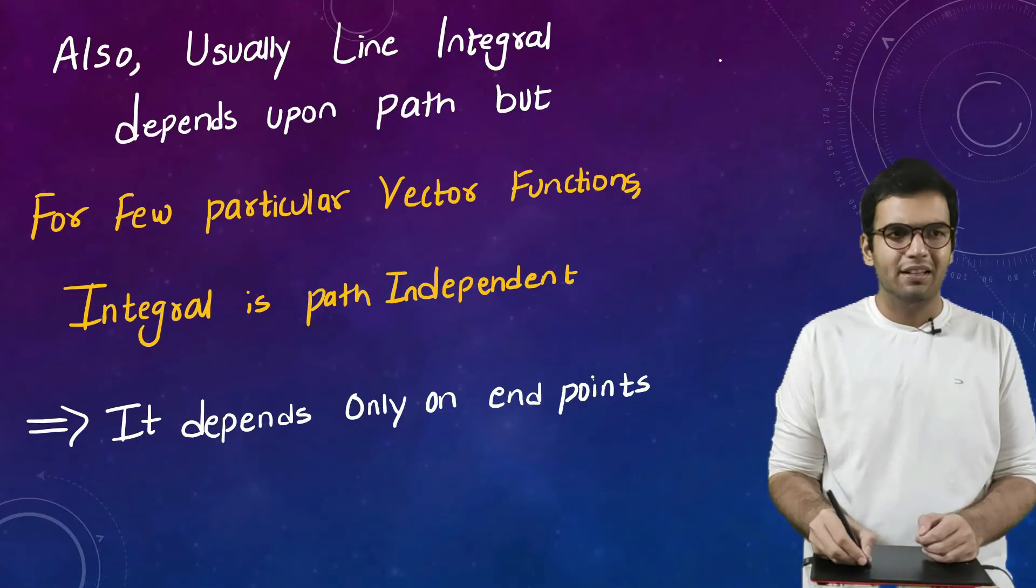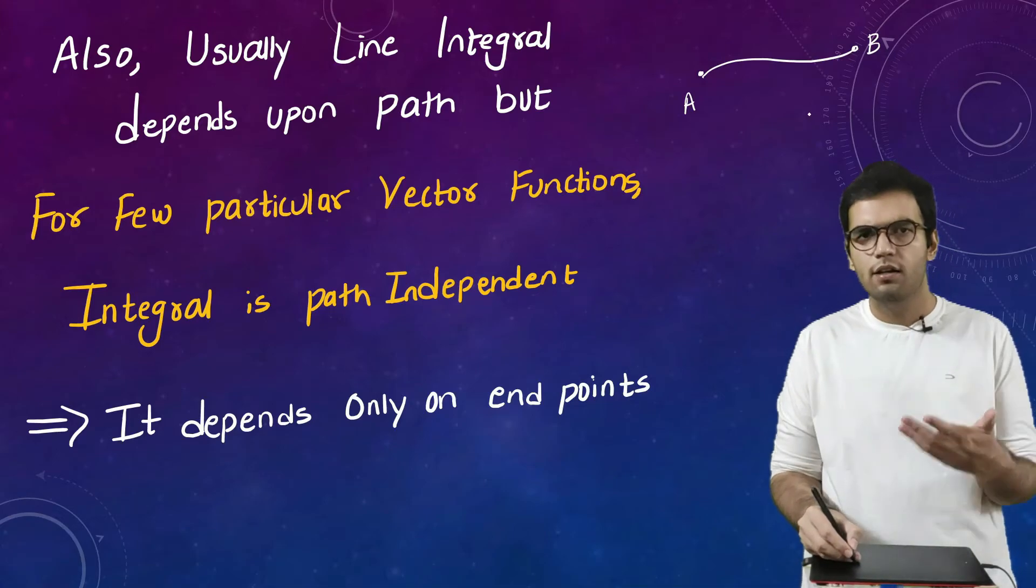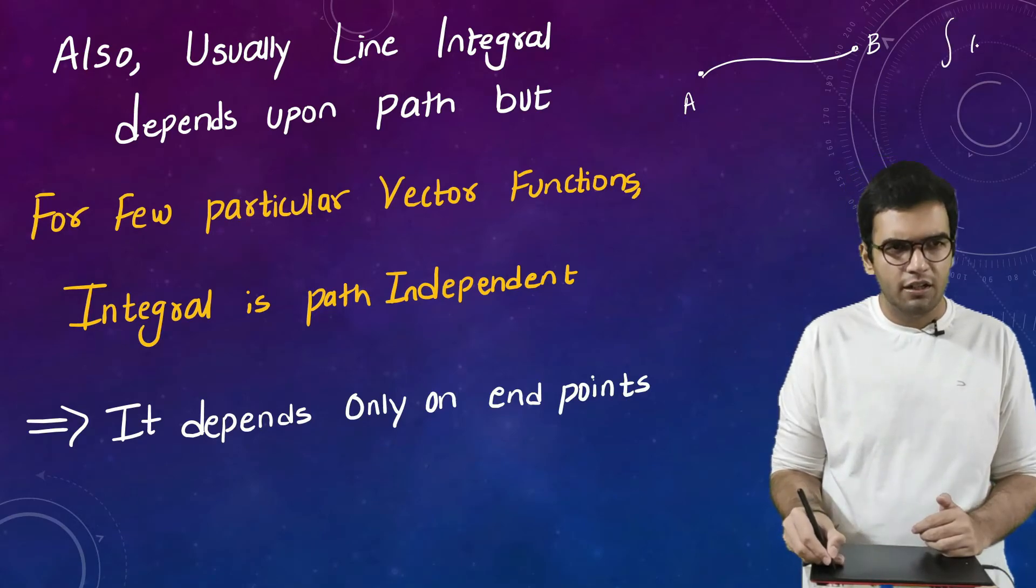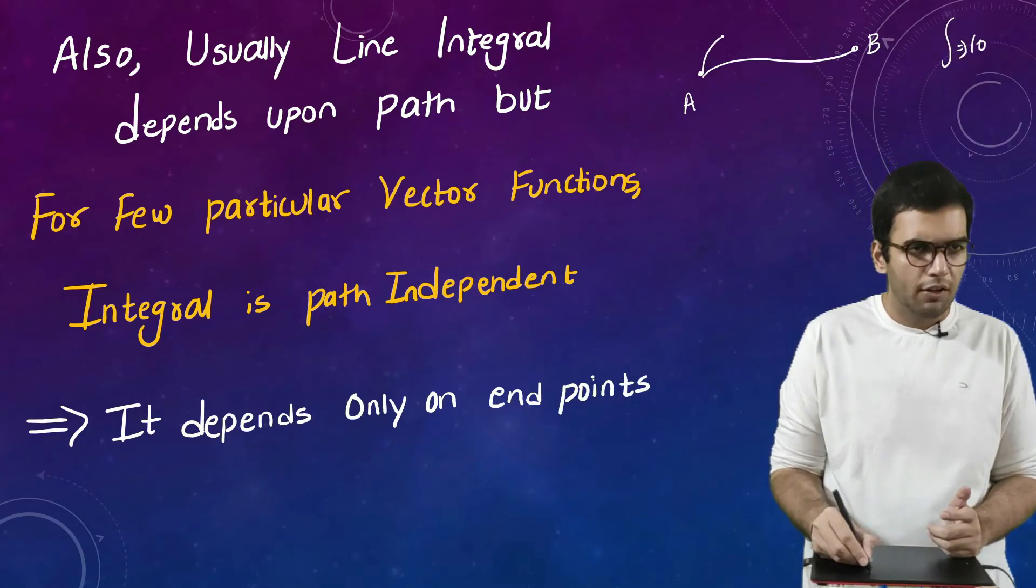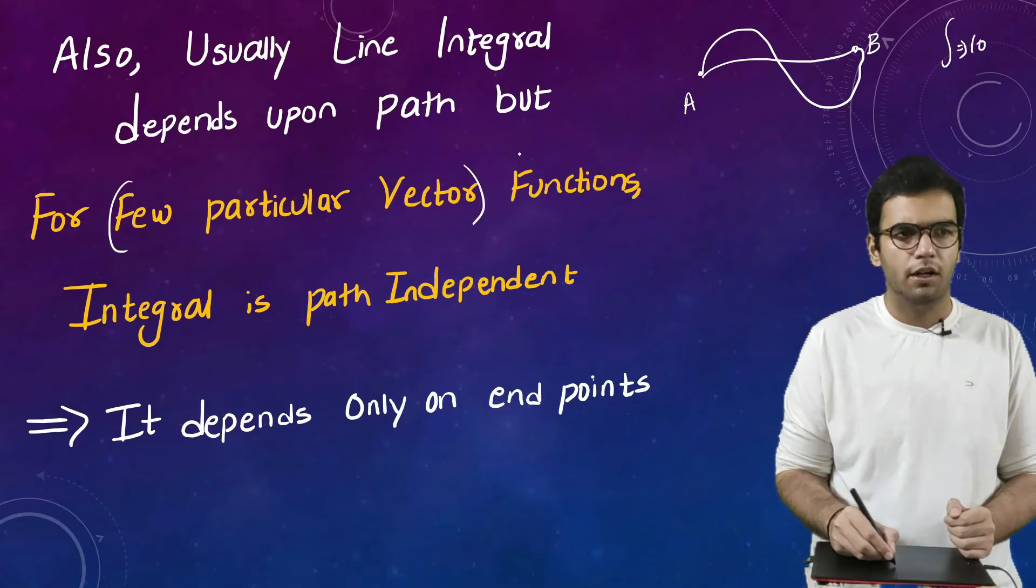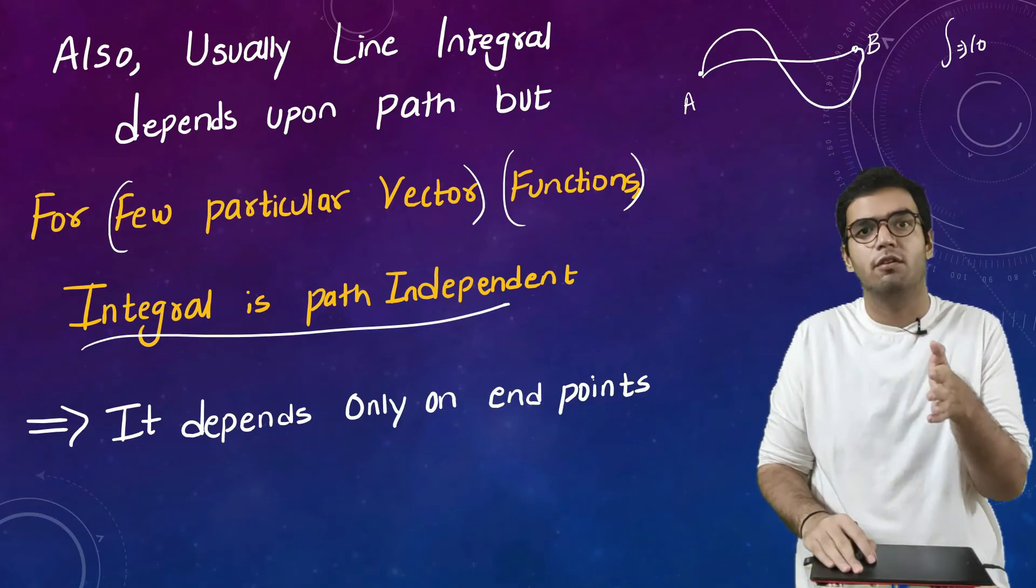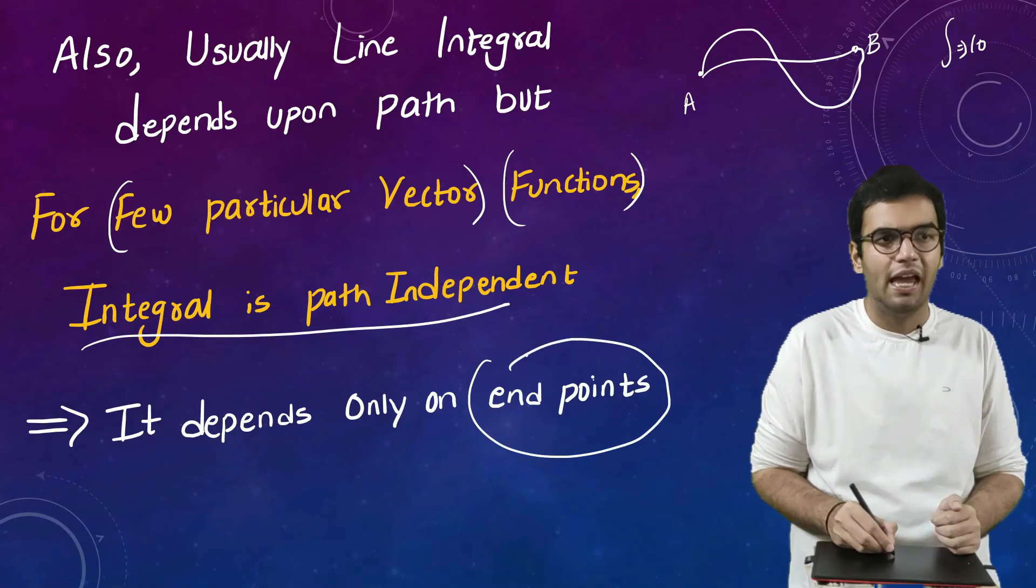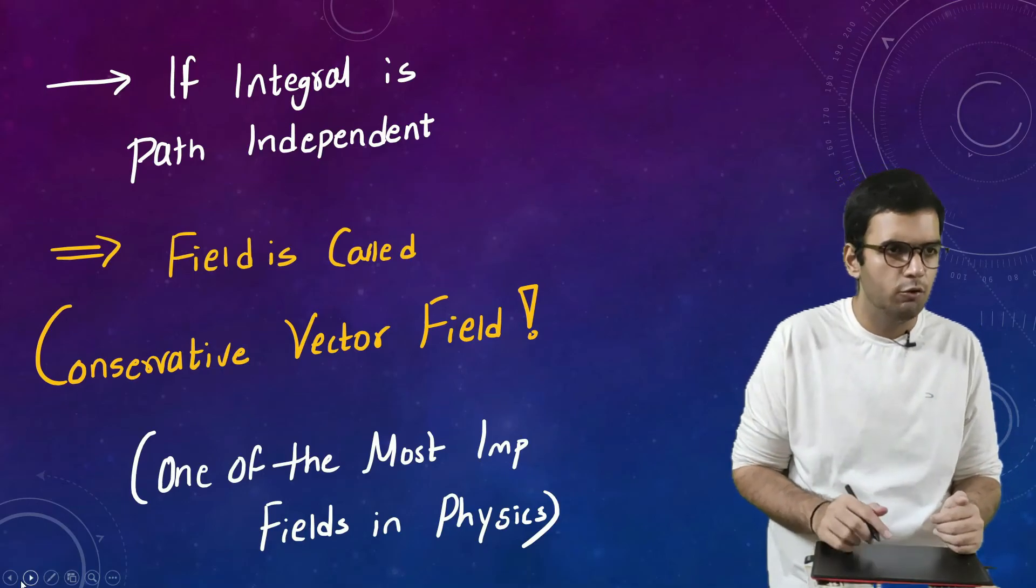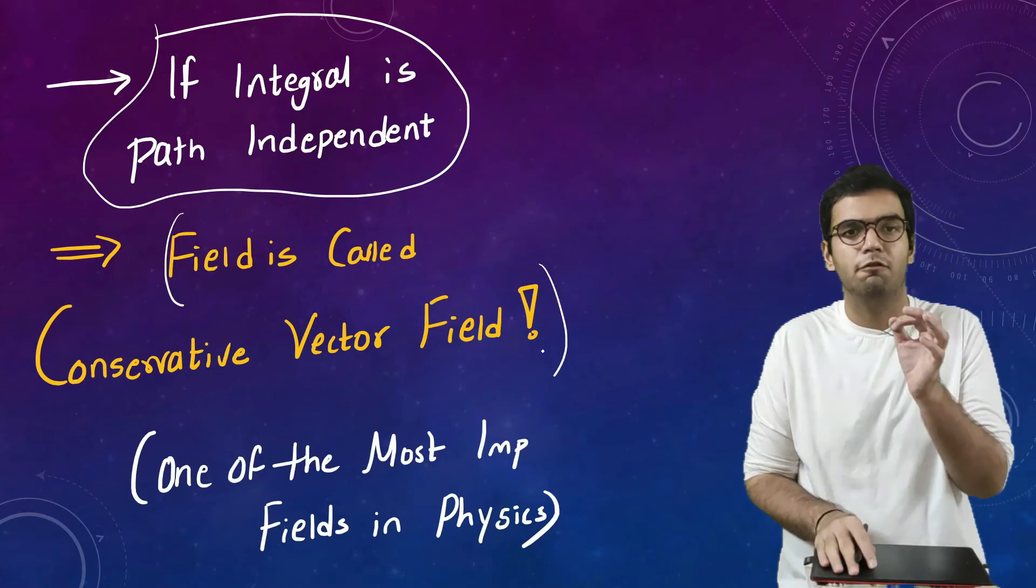Okay, so let's consider, let's conclude the topic by discussing the last point. Usually we would expect that the line integration depends upon the path. For example, if A goes this way to B there would be some answer because the answer of line integration is a scalar quantity, so let's say line integration is 10, the answer which I get. But if A goes to B in this way I would expect that the answer would be different. But for some particular functions, some particular vector functions, integral is also path independent. Integral does not depend upon the path, it only depends upon the end points which are A and B. We also have a theorem for it, we will do in the later videos.